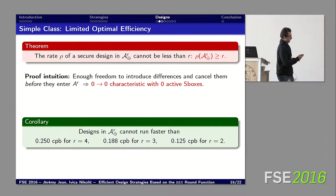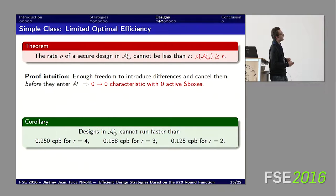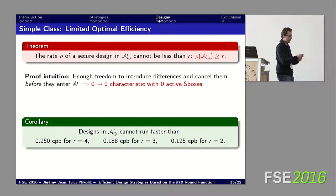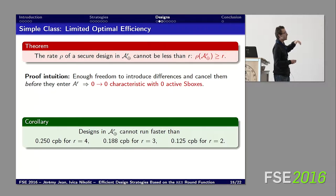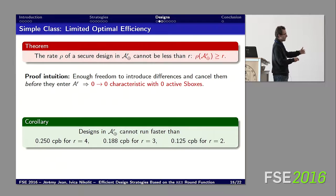For the first class, we prove a theorem: the rate of a secure design using R iterated AES round calls cannot be less than R. This gives a lower bound that cannot be exceeded for that class — the adversary has enough freedom to construct an internal collision with no active AES S-boxes. As a corollary, we cannot go below certain efficiency bounds. For example, using four AES rounds — common in previous schemes — we cannot go below 0.25 cycles per byte, which is already good but we want more.